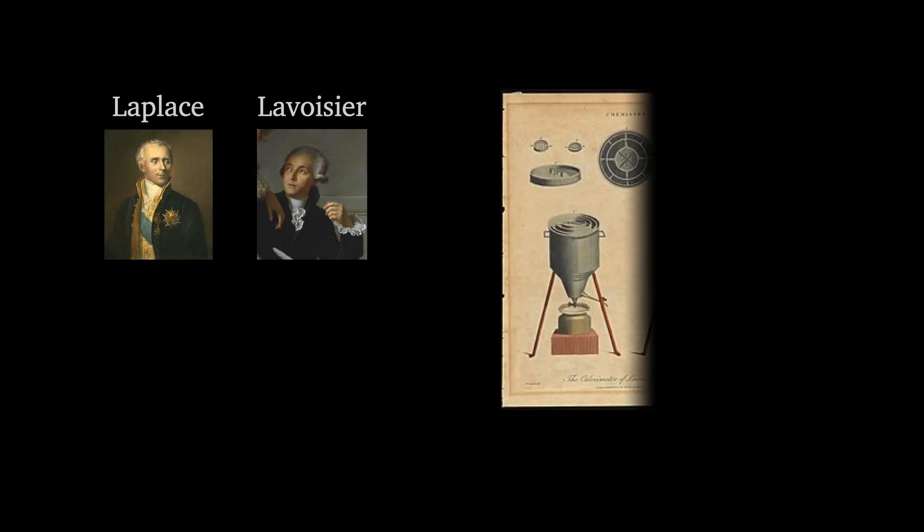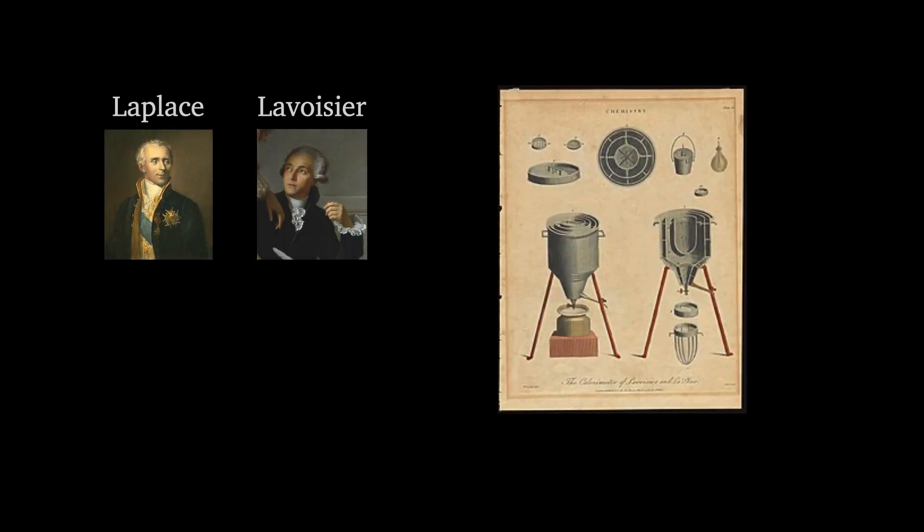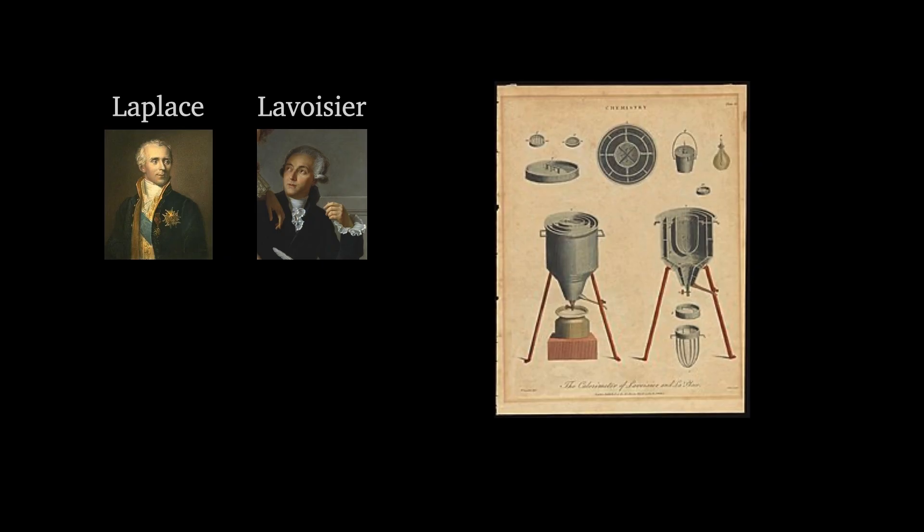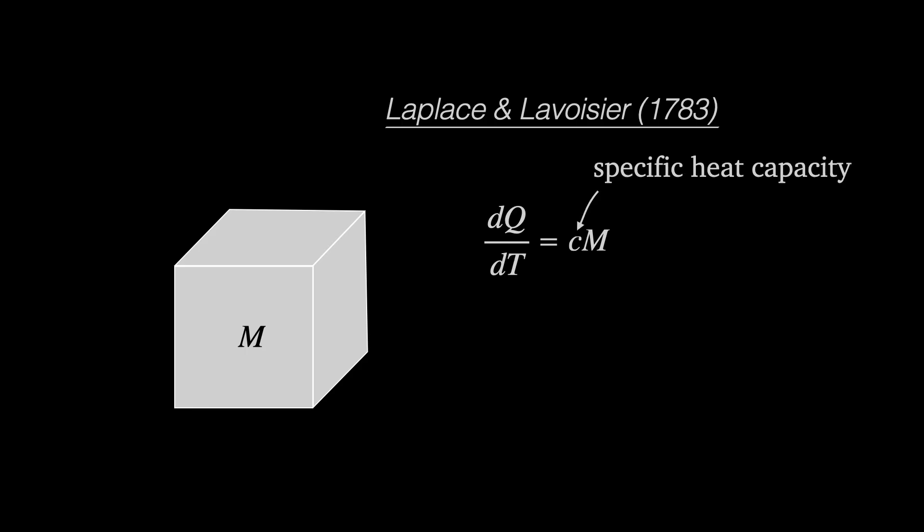And secondly, pioneering experiments by Lavoisier and Laplace, in which they built the first calorimeters, showed that different materials had different capacities for heat storage. They worked out that an increment of heat, dQ, it takes to raise the temperature of a mass m by an increment dT, is equal to a constant c, called the specific heat capacity of the material, times m. A material with a high specific heat capacity therefore takes more heat to raise its temperature. Since an object's mass is its density ρ multiplied by its volume V, we can also write this as equal to c times ρ times V, which will turn out to be more useful later.